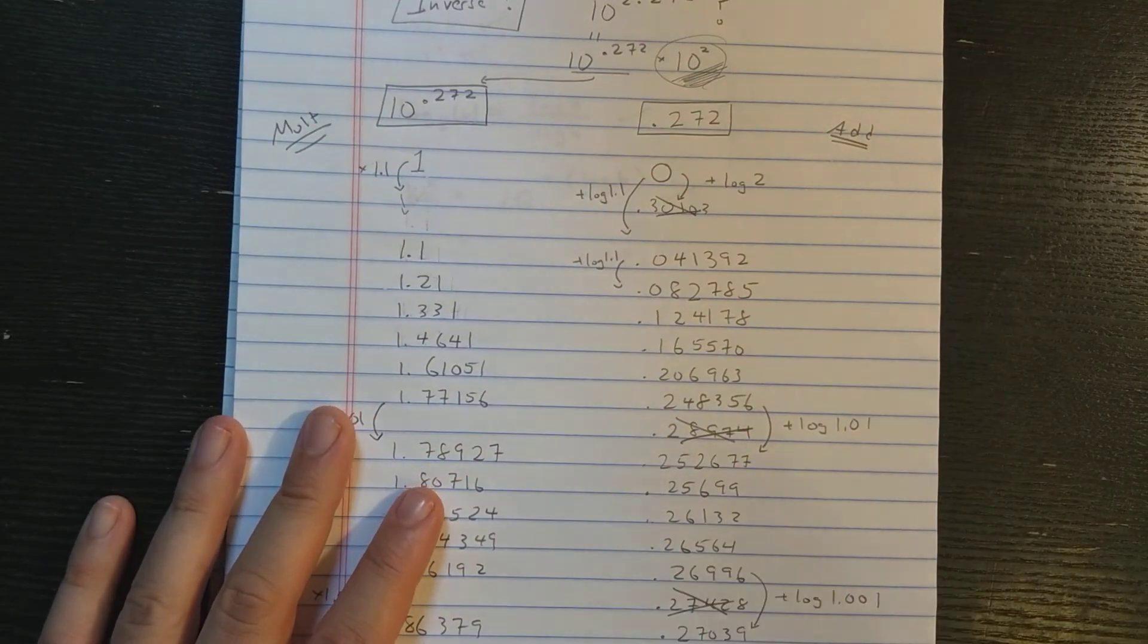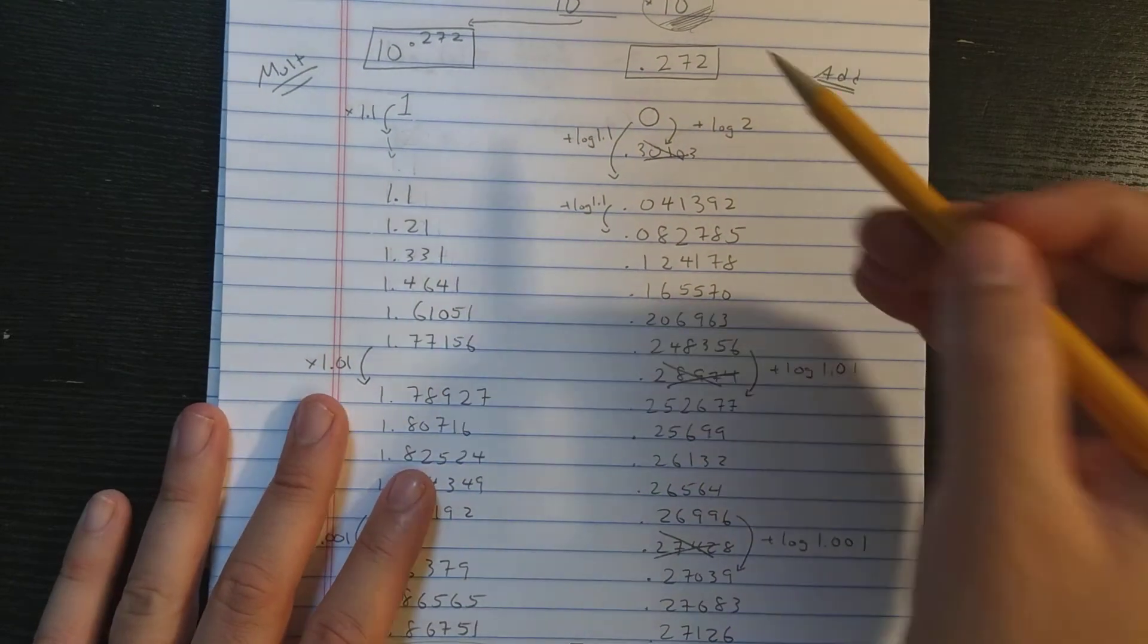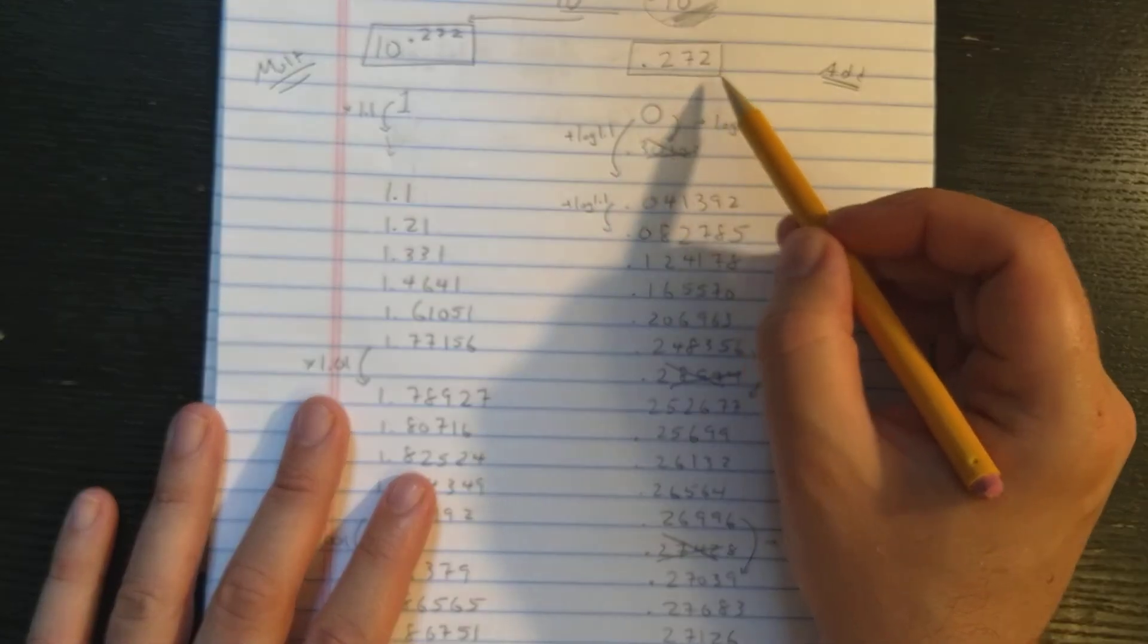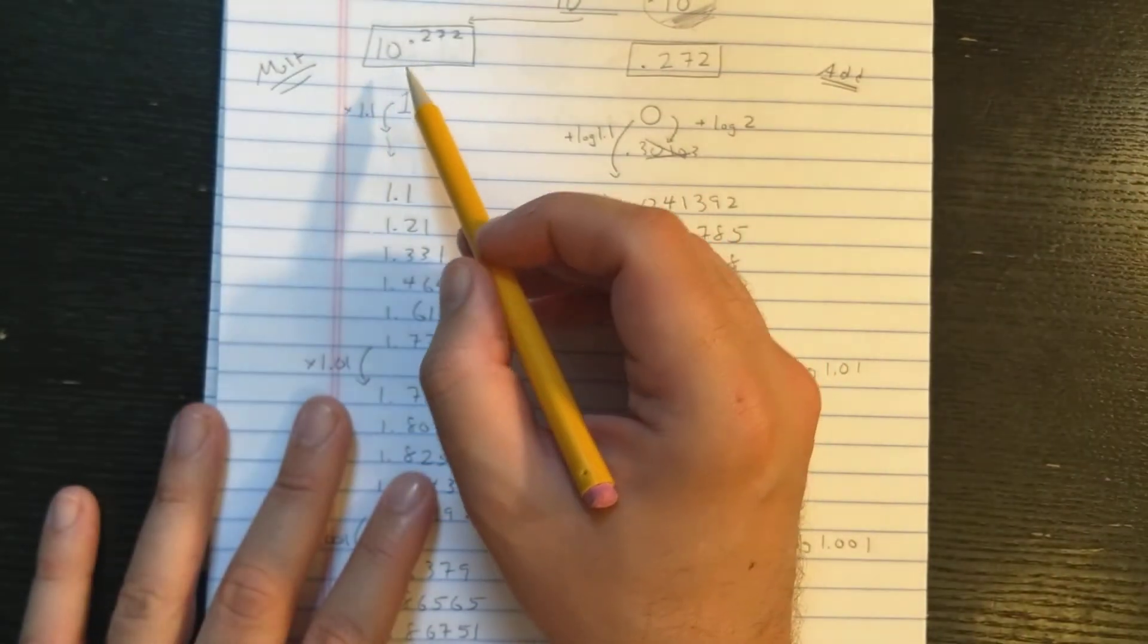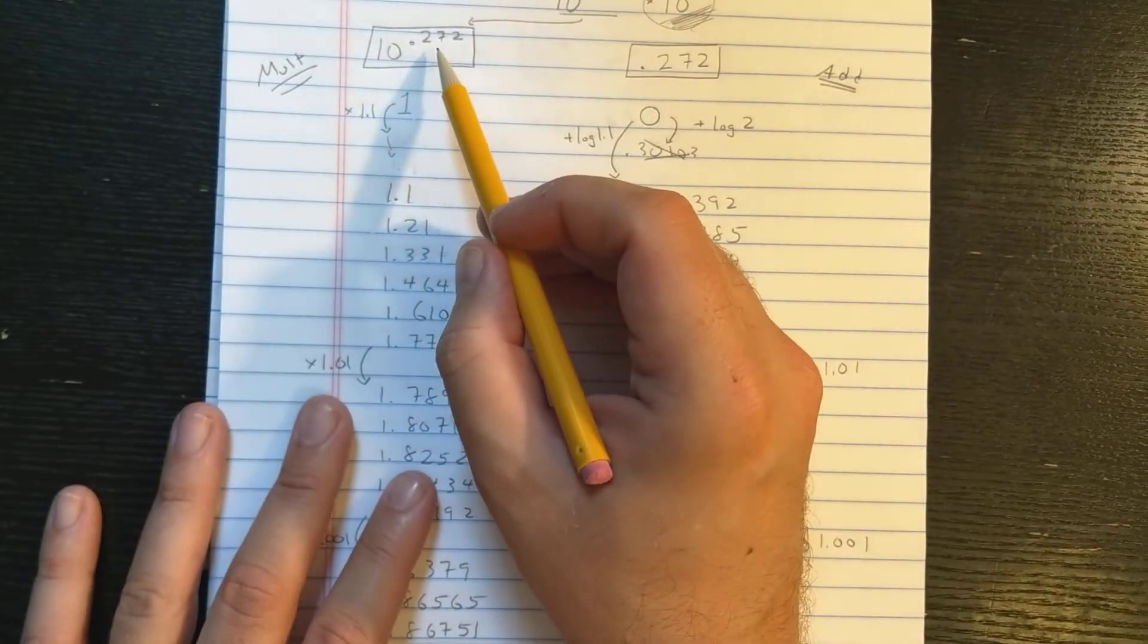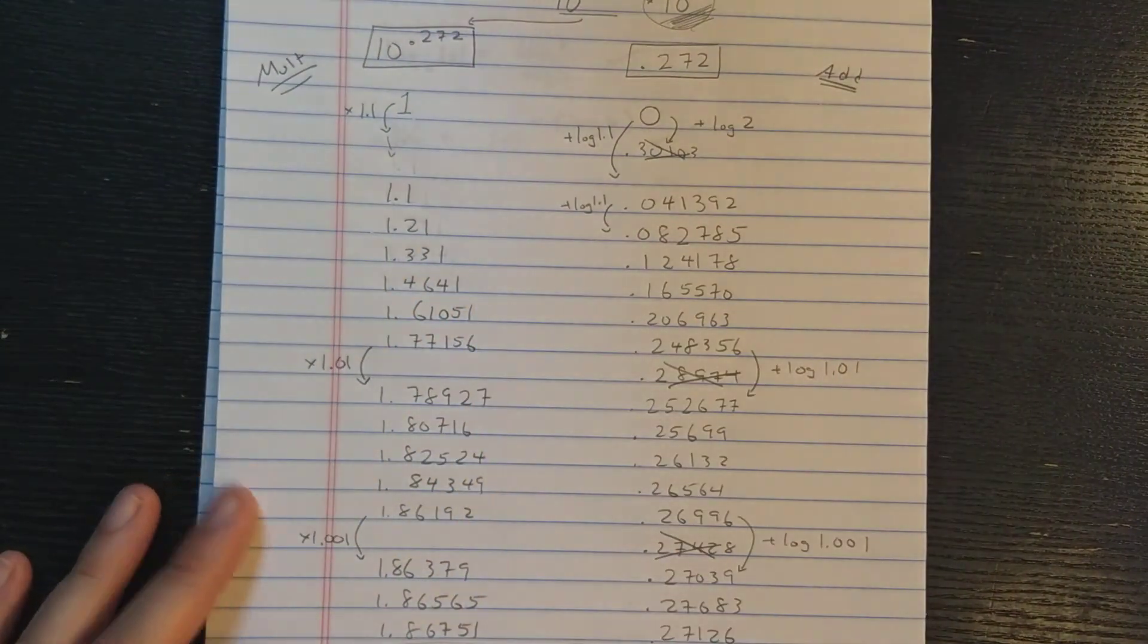So let's see. So again, here, this 0.272, that's the logarithm of 1.87, about. And then here, this 10 to the 2.72, that's going to be the exponential that I want to compute in the end, times 10 to the 2.